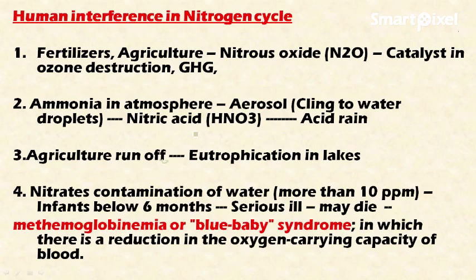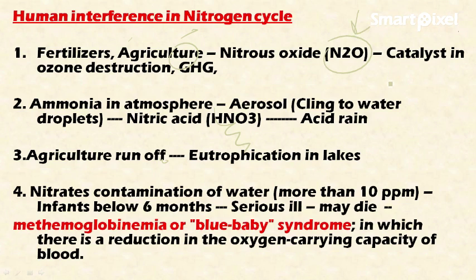Regarding human interference in the nitrogen cycle: fertilizer production and agricultural operations contribute nitrogen to the atmosphere through the release of nitrogen oxides. This has a deleterious effect because nitrogen oxides act as pollutants in the atmosphere, acting as a catalyst in ozone destruction in the stratosphere. Nitrous oxide is also a greenhouse gas, contributing to climate change and global warming.